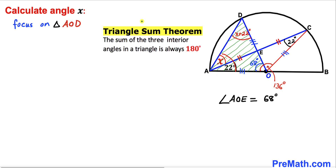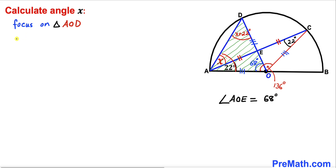Let's recall the triangle sum theorem: the sum of the three interior angles in a triangle is always 180 degrees. So the sum of all three angles — 68 degrees, plus (X + 22) degrees, plus (X + 22) degrees — must equal 180 degrees.